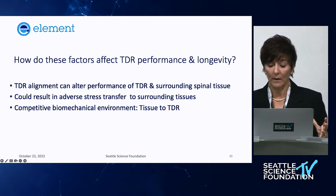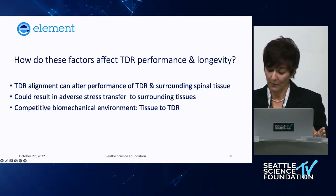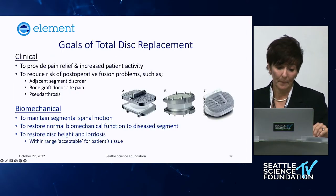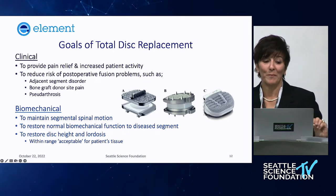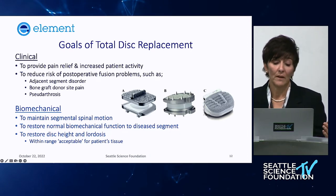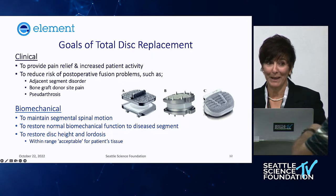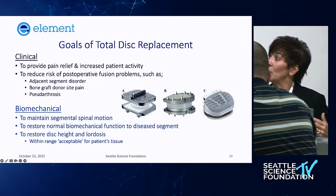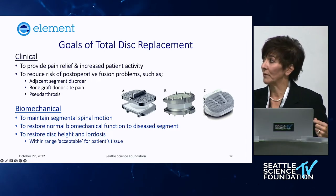How do these factors affect TDR performance and longevity? There are a lot of things that can go wrong and a lot that can go right. The clinical goal differs from the biomechanical goal. Clinically, we want to provide pain relief, increase patient activity, and reduce the risk of adjacent segment disease — adverse stress transfer to other levels causing augmented degeneration. We also want to avoid bone graft donor site pain and minimize the risk of pseudoarthrosis.